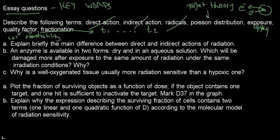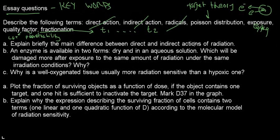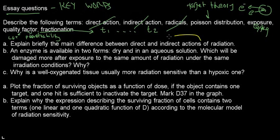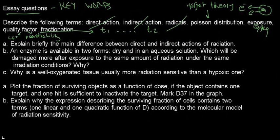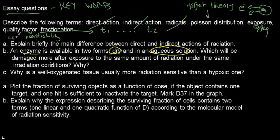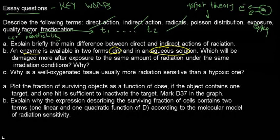The main difference between direct and indirect action of radiation: indirect action is due to the specimen being surrounded by solvent molecules that can be ionized into radicals, which then affect the target molecule. Direct action is hitting the molecule directly; indirect is hitting molecules around it, causing radicals that may then interact with it.